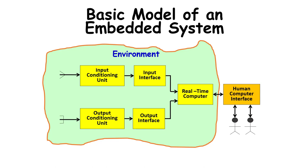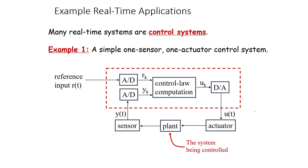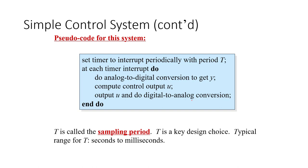As we have seen, the basic model of an embedded system is like this. We have an input conditioning unit, an input interface, a real-time computer which takes a look at the stimuli and responses generated, and then a human-computer interface if the real-time system is interacting with human beings. Example real-time applications include a single sensor-actuator system where the sensor computes based on stimuli and system parameters what the output should be, compared to a reference input, and the actuator changes the actual system — the plant — so this loop goes on as a real-time loop.